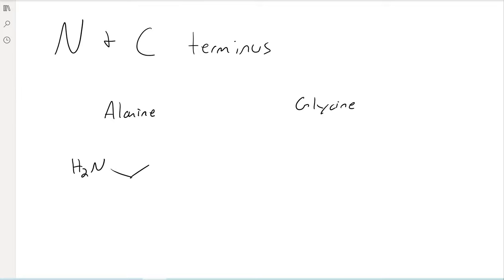We've got our amine. We've got our alpha carbon with our group. In the case of alanine, it's just a methyl. And then, of course, the carboxylic acid.